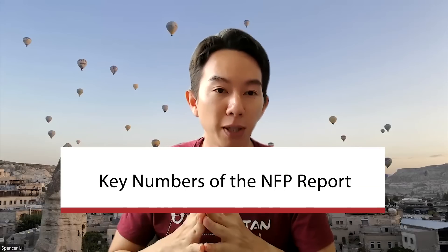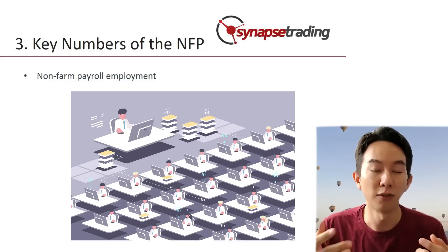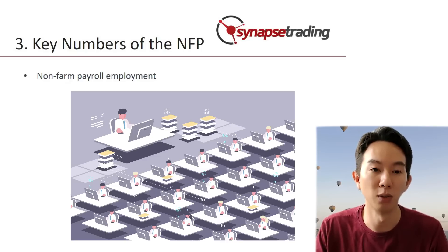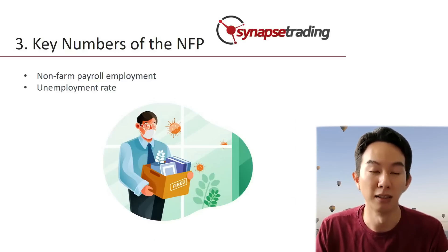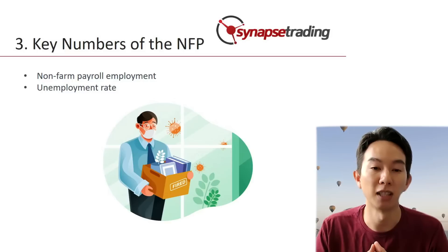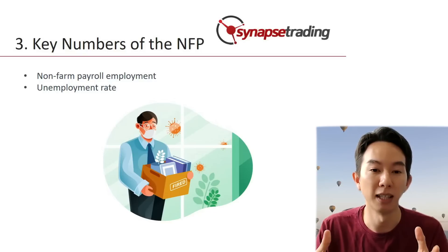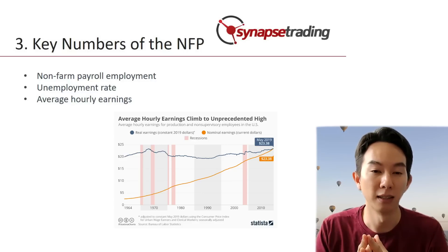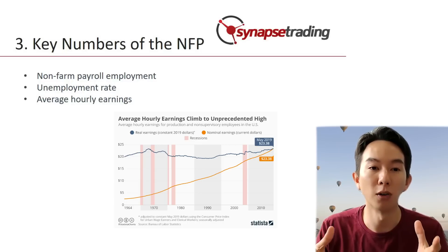So what are the key numbers of the NFP report? The non-farm payroll report released by the BLS contains a number of important data points. First is the non-farm payroll employment itself — the main number of the report, measuring the change in the number of non-farm jobs in the US during the previous month. A positive number indicates job growth while a negative number indicates job losses. Next is the unemployment rate, which is the percentage of the labor force that is unemployed but actively seeking work. Next, we have average hourly earnings, which measures the average pay per hour of all non-farm employees and is an important indicator of wage growth and inflationary pressures.